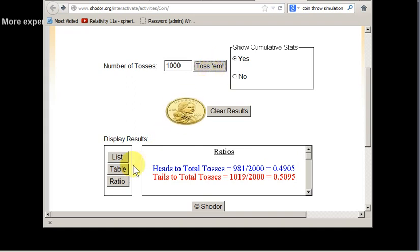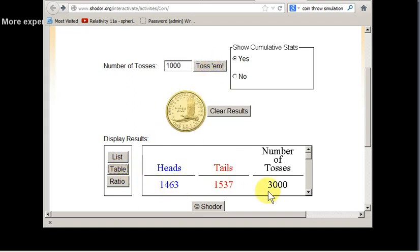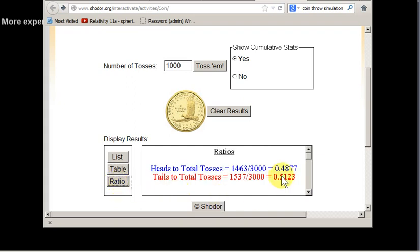Let's toss this again. It's accumulating the results. So effectively, we're looking at the number of heads from 3,000 tosses here. And if we get this ratio, we get 0.4877.